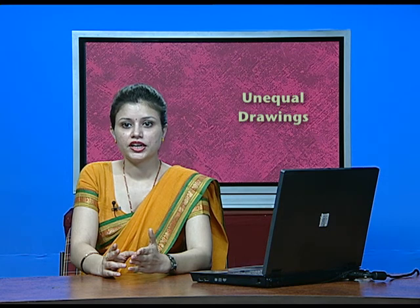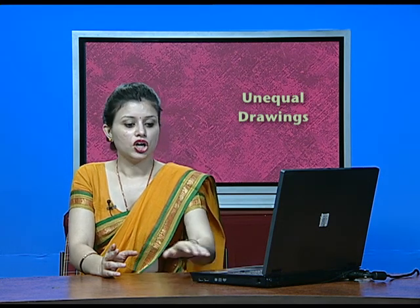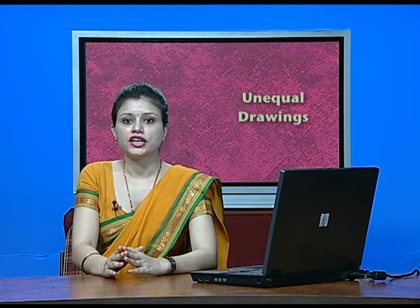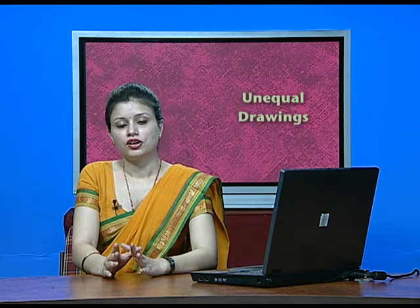We then calculate the product by multiplying each drawing amount by its months: 2,000×11=22,000; 1,000×7=7,000; 2,000×6=12,000; giving a total product of 43,000. Interest on drawing = 43,000 × Rate/100 × 1/12. For unequal drawings, the average period is always 1/12. For drawings against capital, no interest is calculated. That covers all the cases of interest on drawing — thank you and have a nice day.